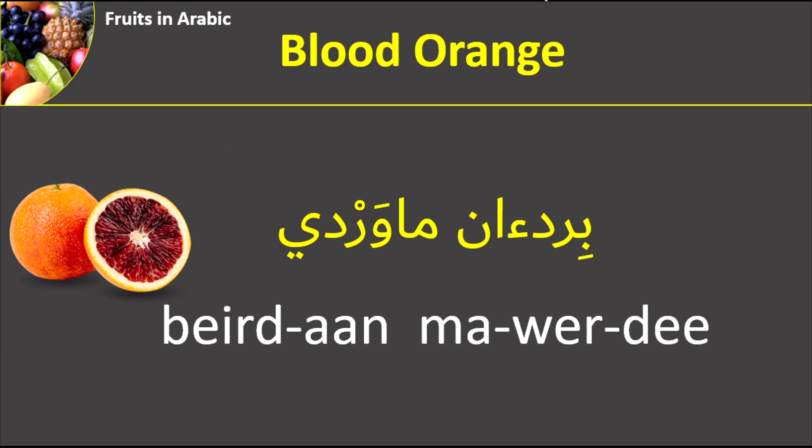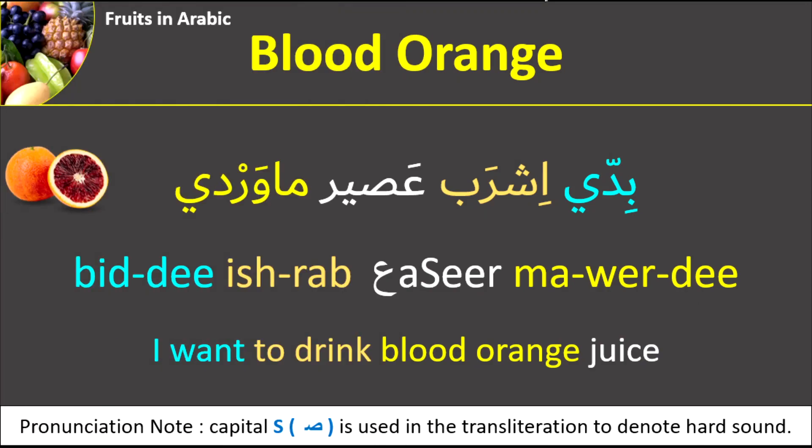Blood orange — Burdan. Mawardi. For example: Biddi ishrab asir Mawardi — I want to drink blood orange juice. Here I didn't say Burdan; we usually just say Mawardi. I will say it again: Biddi ishrab asir Mawardi.